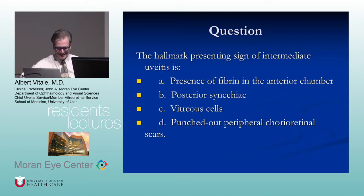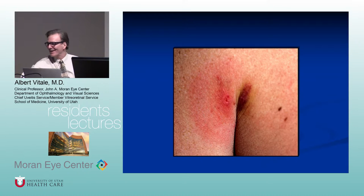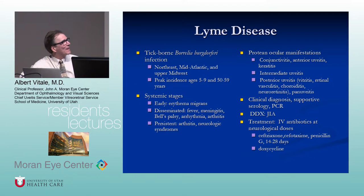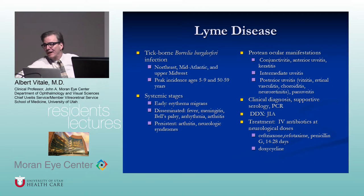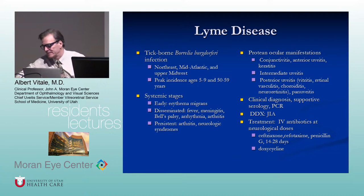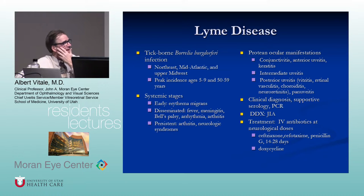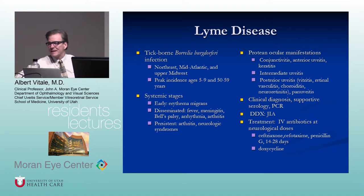Lyme disease is a tick-borne illness endemic to the Northeast, Mid-Atlantic, and Upper Midwest. Kids are more susceptible. There are systemic stages, like syphilis — it's a spirochetal disease. Early: erythema migrans. Disseminated: fever, meningitis, Bell's palsy (seventh nerve palsy is very common — in endemic areas or sarcoidosis). Late: arthritis and persistent neurologic disease.